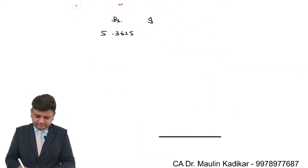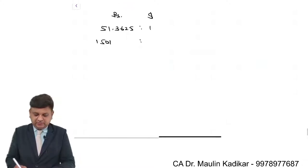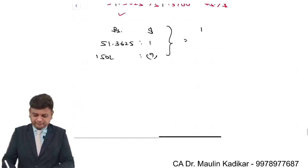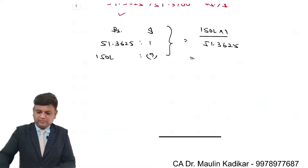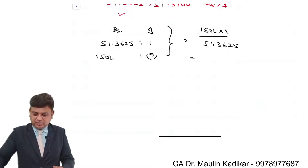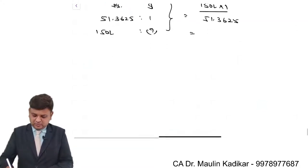51.3625 rupees is equal to $1, so 150 lakhs of rupees divided by 51.3625 comes to $292,041.86.